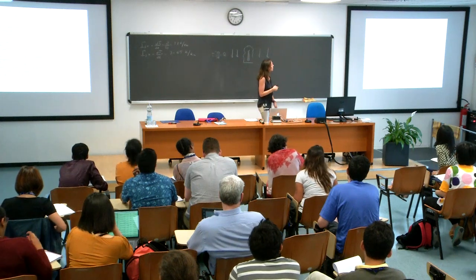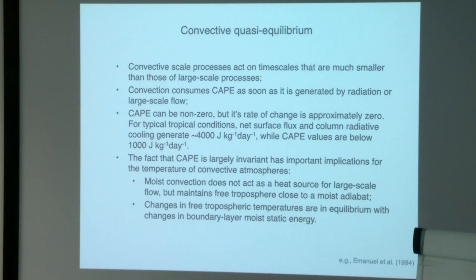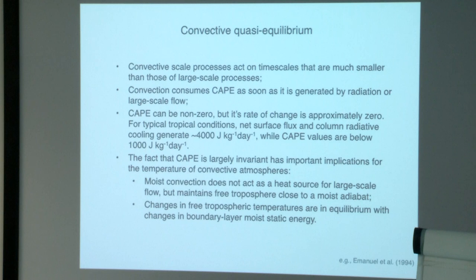So how should we think about the interactions between convection and large-scale circulations? The concept of convective quasi-equilibrium—dating back to Arakawa-Schubert 1974 but really conceptualized by Emanuel et al. 1994—says we should really be thinking of convection as being in statistical equilibrium with the large-scale environment. This requires a separation between the spatial and temporal scales over which convection acts and the larger scales of processes such as large-scale flow or radiation. Convection acts on very small and very fast time scales, and as soon as CAPE is made available or produced by radiation or large-scale flow, convection consumes it very rapidly—in just a few hours.